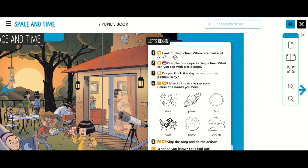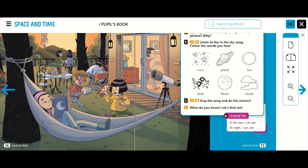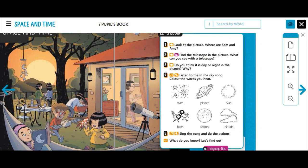Number 1. Look at the picture. Where are Sam and Amy? Are Sam and Amy in the school? No, they aren't. They are playing in the garden. I think they are at Amy's house because I can see Amy's father and we also saw Amy's sister reading her book here. So, they must be at Amy's house.